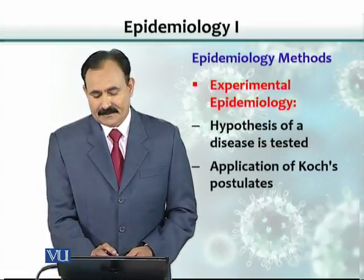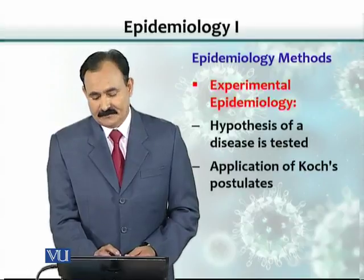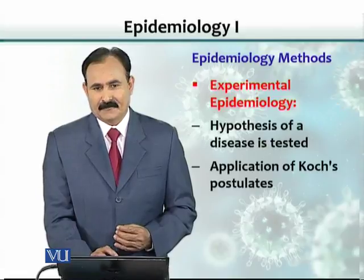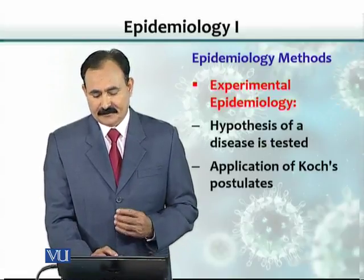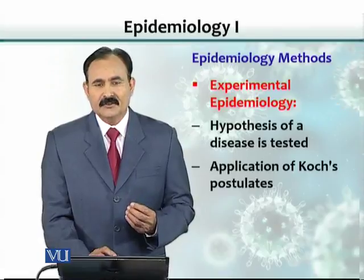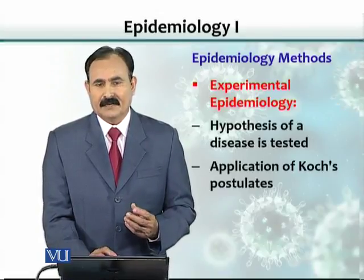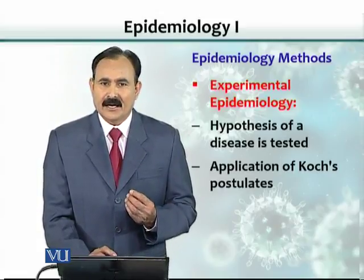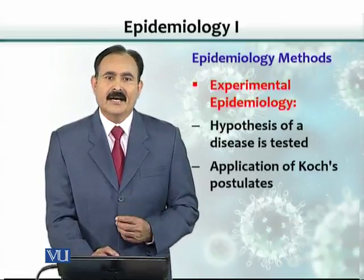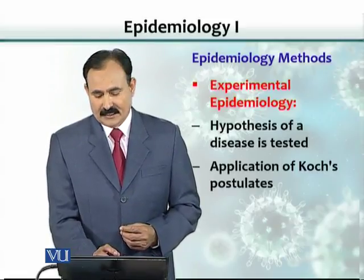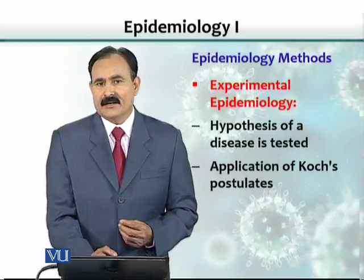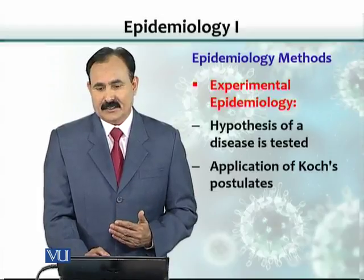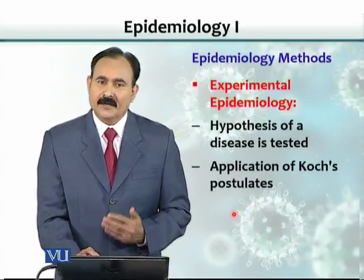The third approach is experimental epidemiology. Once we have established from the analysis of the data that there seems to be a cause of a disease — whether infectious or non-infectious — we make a hypothesis and then test it. This testing of a hypothesis is called experimental epidemiology, and it also includes the application of Koch's postulates.